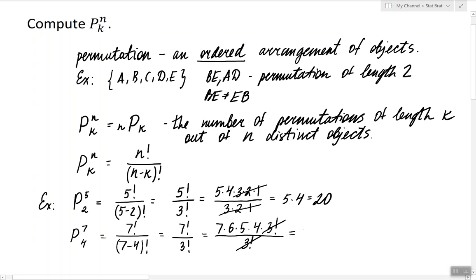So what's left is 7 times 6 times 5 times 4. 7 times 6 is 42, and this equals 840.